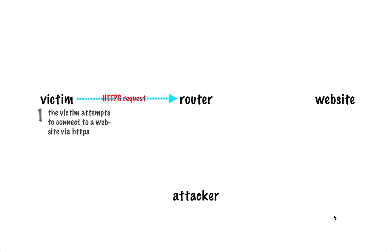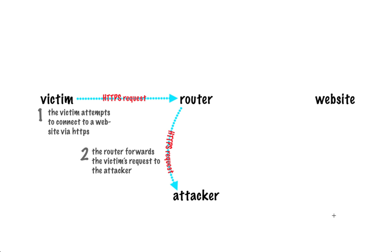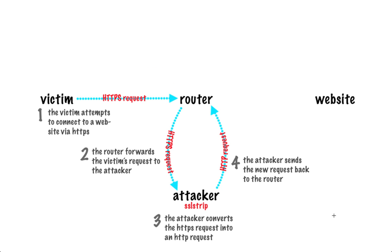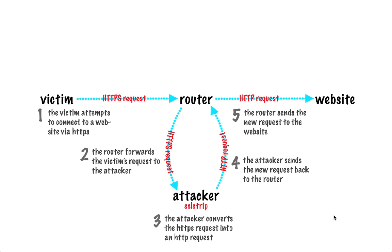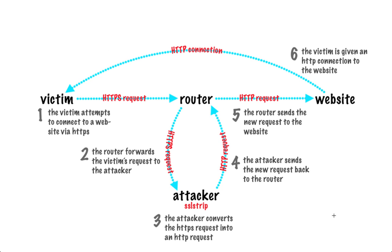The first thing that happens is the victim opens their web browser and attempts to connect to a website via HTTPS. Because we're running ARP spoof, the router forwards that request to us, the attacker. We cycle it through SSL strip to convert the HTTPS request into an HTTP request, then send that request back to the router, which sends it to the website. The website responds and the victim is connected via HTTP.